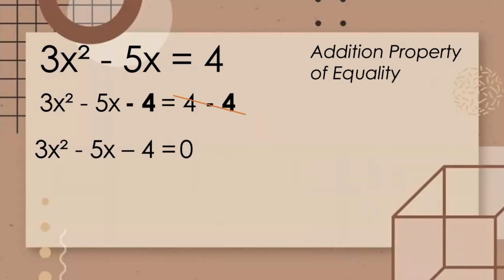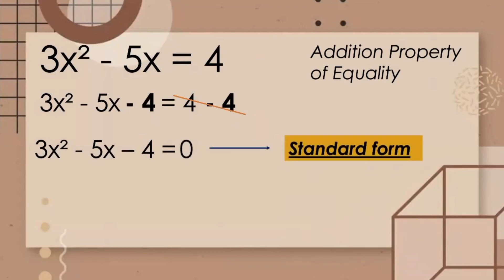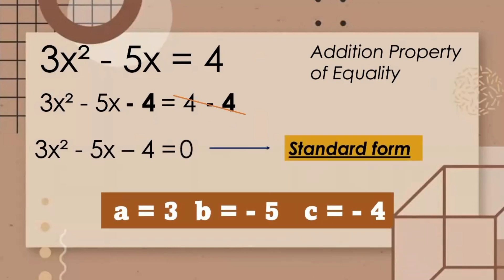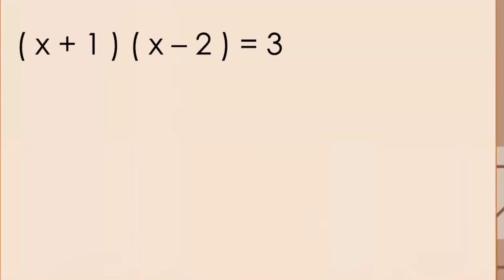Now we can easily identify the values of A, B, and C. The value of A is positive 3, B is equal to negative 5, and C is equal to negative 4.